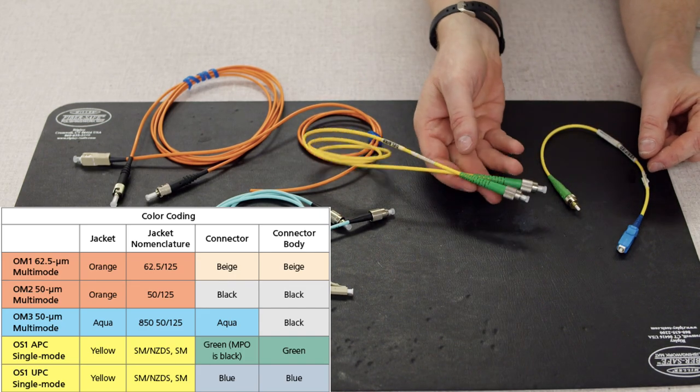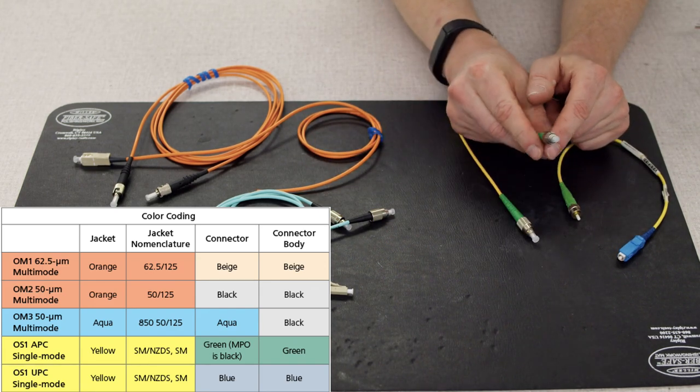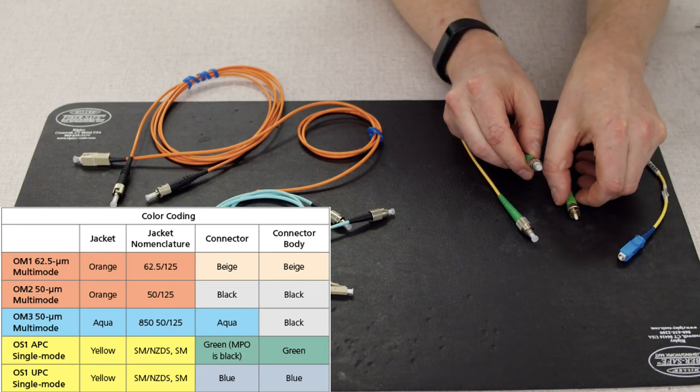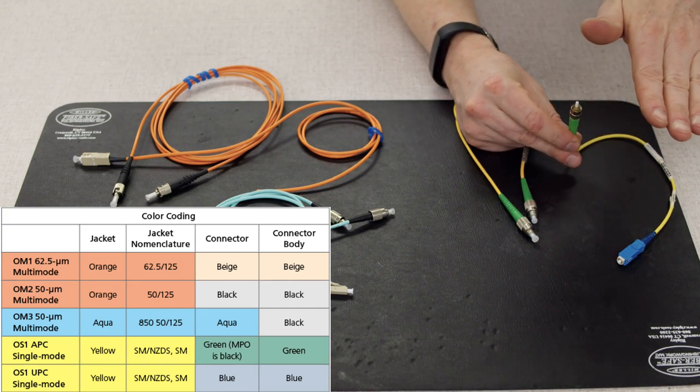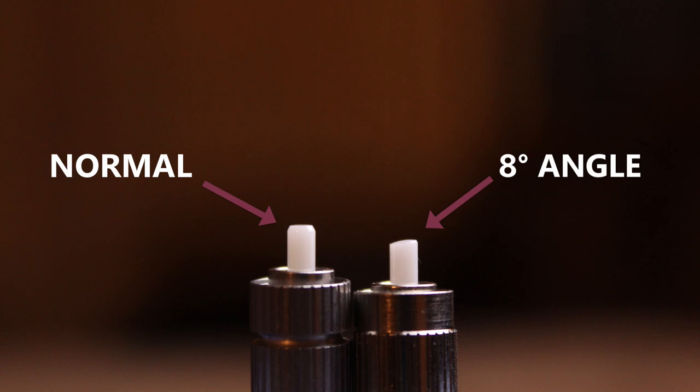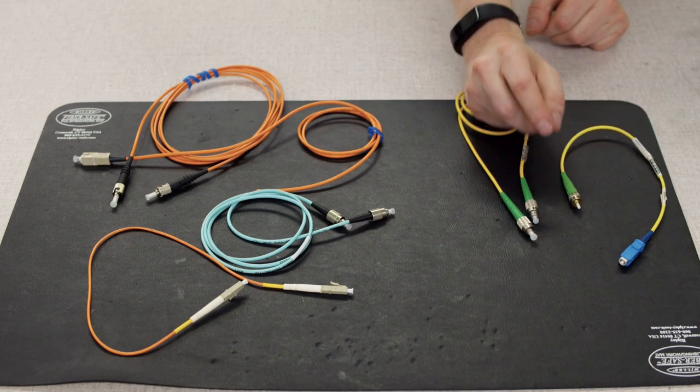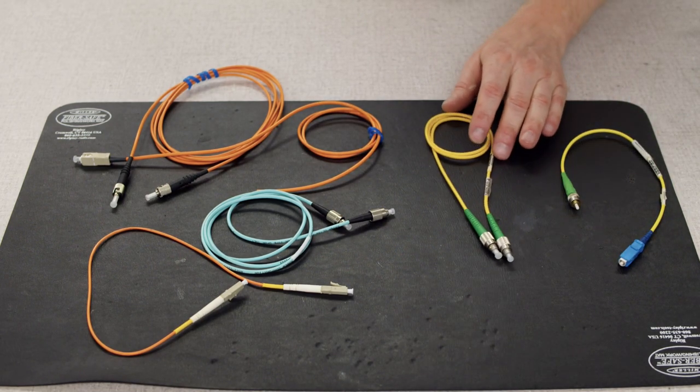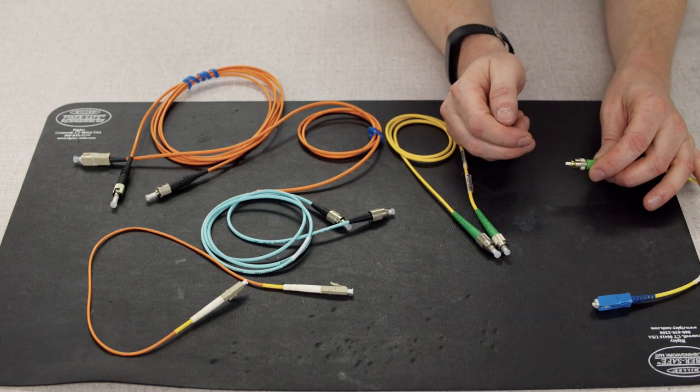So single mode connectors are always of a higher quality with tighter tolerances for that ferrule hole and all other tolerances held tighter to make sure that the cores align perfectly. With that said if you see blue it usually signifies a single mode connector. So there's a high probability that it's going to be attached to something that's yellow. Really what it signifies is a what they call a UPC connector which is ultra polished connector. It simply means that the polish on the end face of this connector is taken to a higher level to ensure the minimum of loss when it's connected to a similar connector.